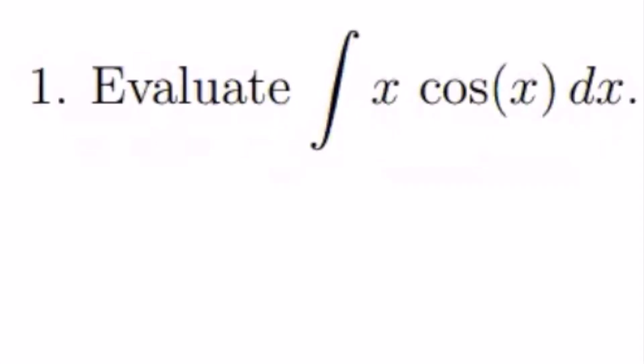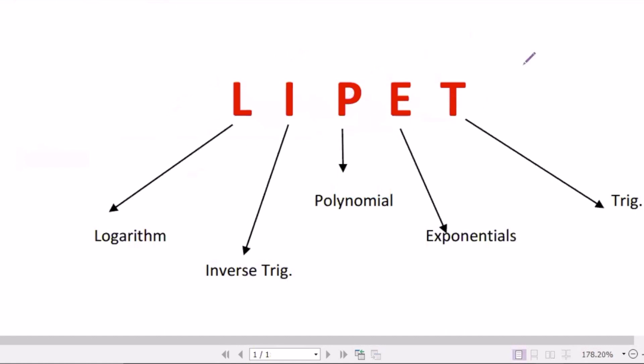First, we have to select u and dv. When you select, we can use LIPET. If you have a logarithmic function, you can select it as u.